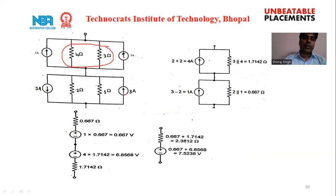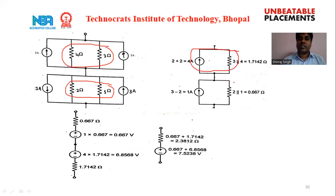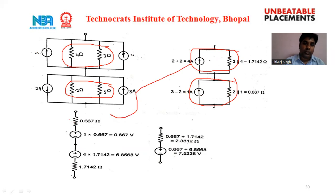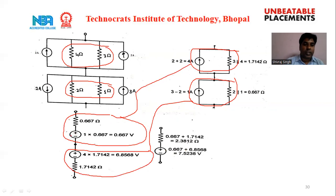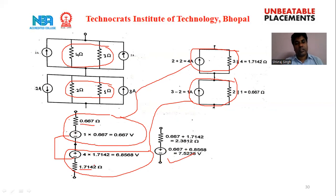The remaining current sources are connected in parallel but in opposite directions, giving 3 minus 2 equals 1 ampere. The parallel resistance of 2 ohm and 1 ohm gives 2/3 ohm, approximately 0.67 ohm. These parallel current-resistance combinations are converted into voltage sources. The two resulting series voltages are combined into a single voltage source, and the series resistances are combined into a single resistance, completing the simplification.